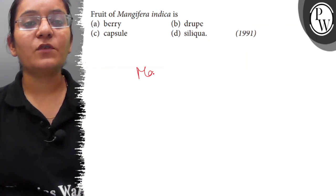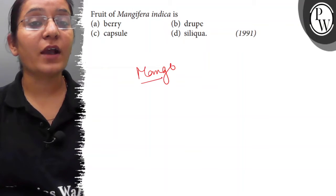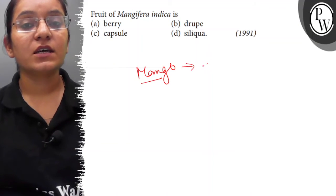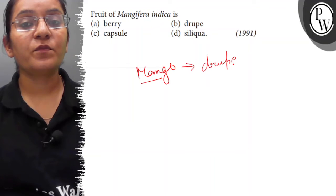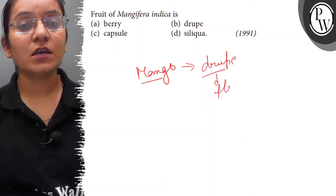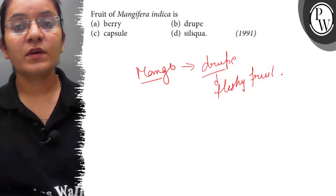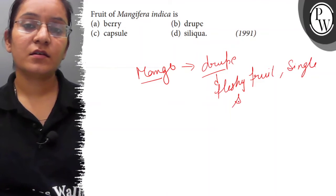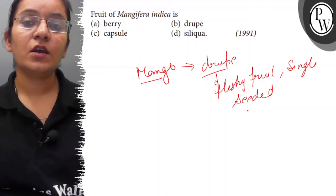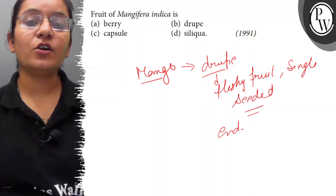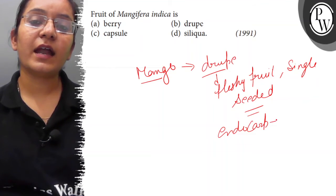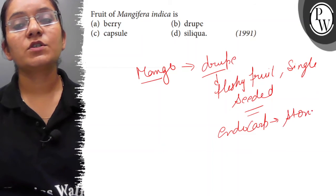So, mango, Mangifera indica is a scientific name of mango and mango is drupe fruit. Drupe fruit means a fleshy fruit with single seeded fleshy fruit where the endocarp become stony.